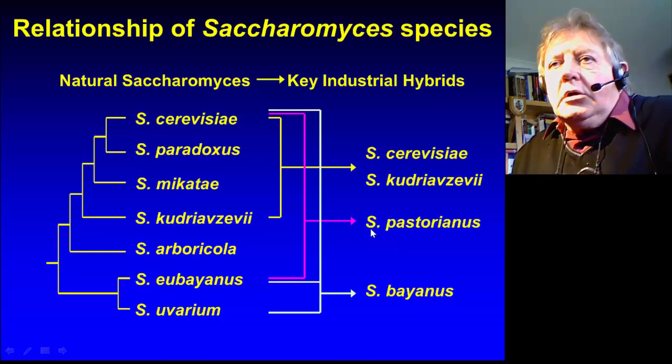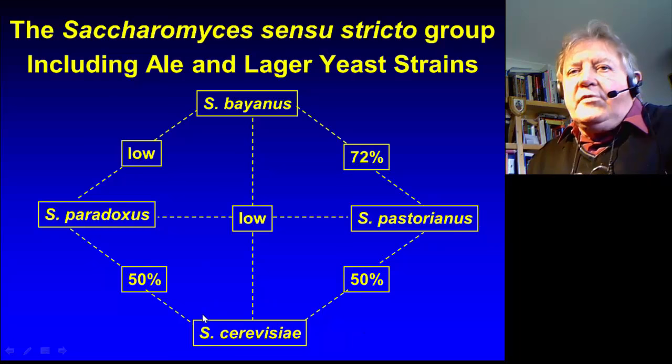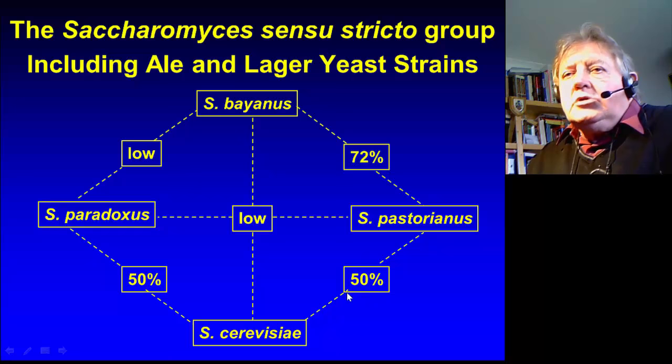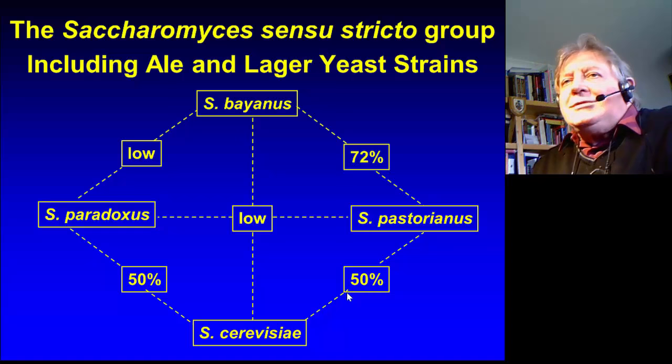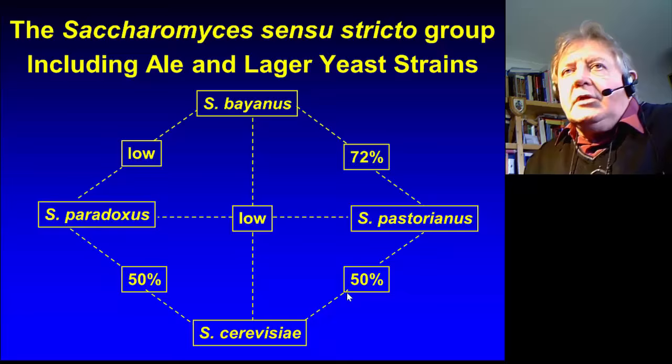Lager is very important because it is the most important beer in volume terms produced on this planet. Saccharomyces pastorianus and Saccharomyces cerevisiae are related — they have what we call 50% gene homology. That's not a great relationship; they are, if you like, distant cousins. It's worth remembering that we, Homo sapiens, have 98% homology to a variety of monkeys. So they're not that related.